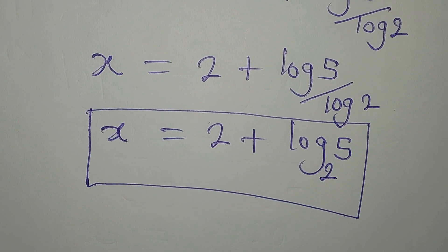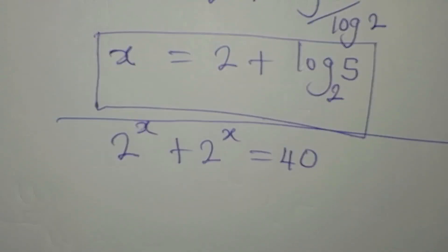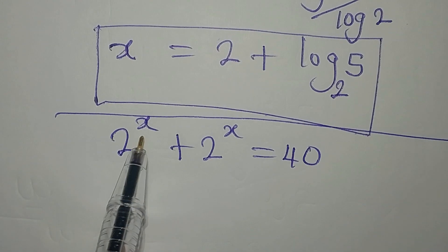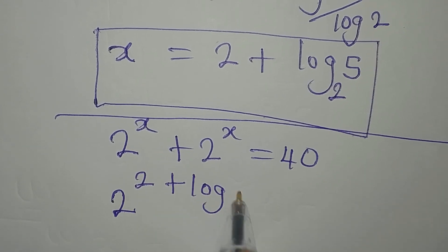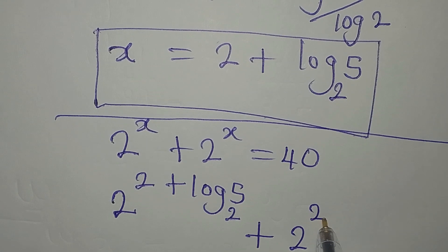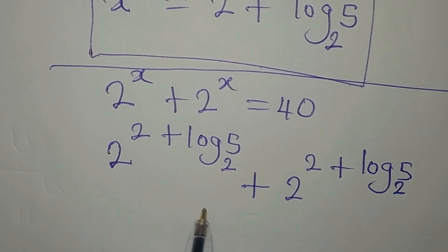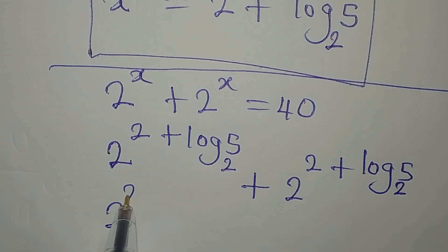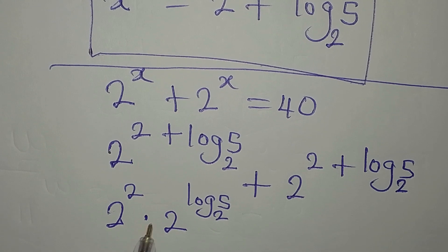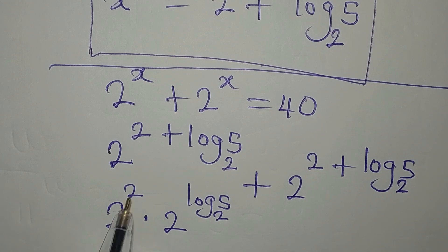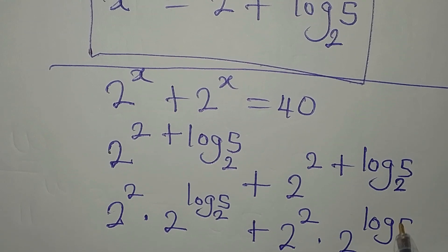Now we verify. The original equation is 2 to the power of x plus 2 to the power of x equals 40. We substitute x equals 2 plus log base 2 of 5. This gives 2 to the power of (2 plus log base 2 of 5) plus 2 to the power of (2 plus log base 2 of 5). Applying the law of indices, we split each term: 2 to the power of 2 times 2 to the power of log base 2 of 5, repeated twice.